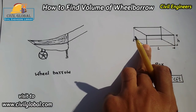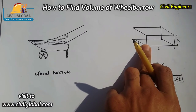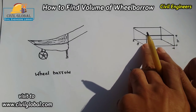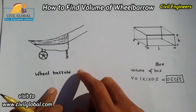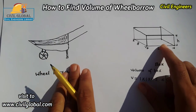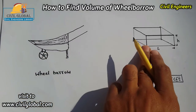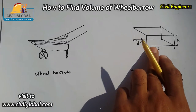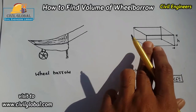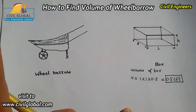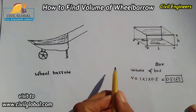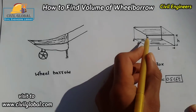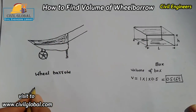When you put materials in this box — for example concrete, cement, sand, aggregate, or any materials — you must fill this box completely. Then take the box and put all the materials into the wheelbarrow. When the wheelbarrow is completely filled using two boxes, three boxes, four boxes, etc., the total volume of those boxes equals the volume of one wheelbarrow.